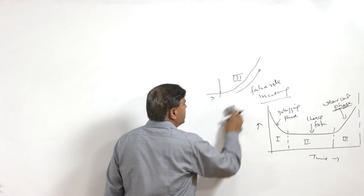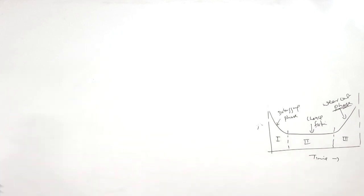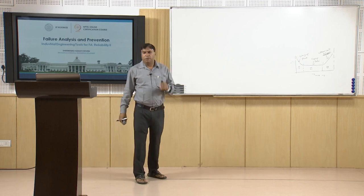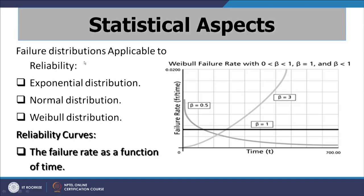The failure rate as a function of time varies for different types of products. There are three kinds of variations generally observed with regard to the failure rate as a function of time, indicated with the help of a diagram showing the failure distributions normally applicable to reliability calculations. One is the exponential distribution, second is the normal distribution, and the third one is the Weibull distribution. In one case the failure rate is decreasing, in another case it is increasing, and in the third case the failure rate is constant.